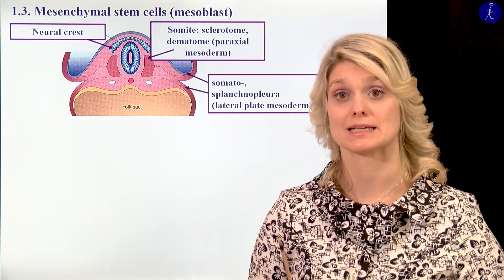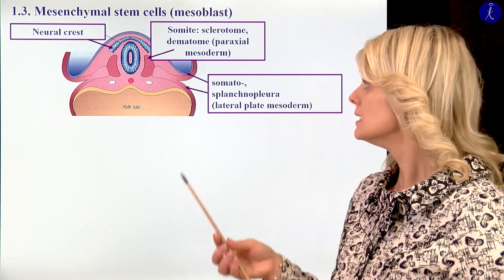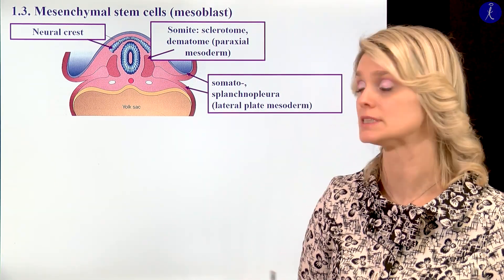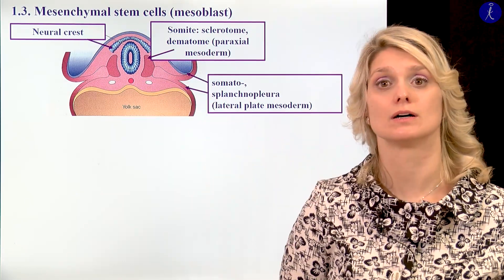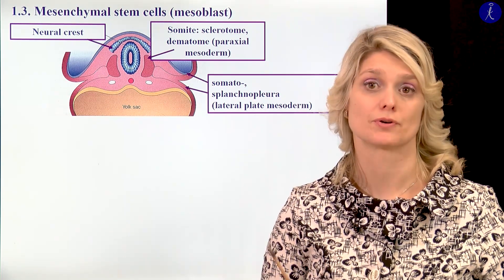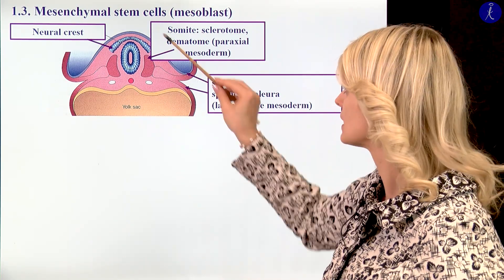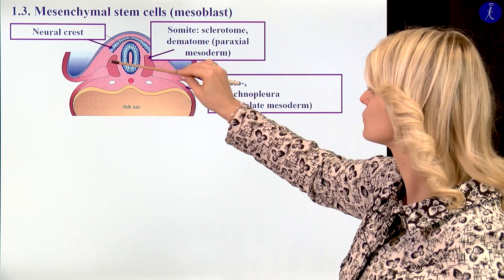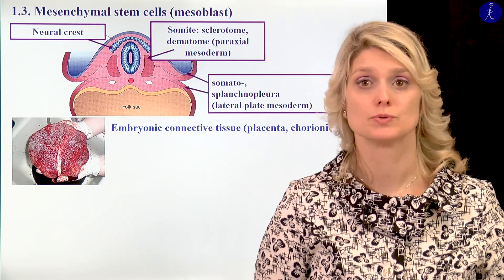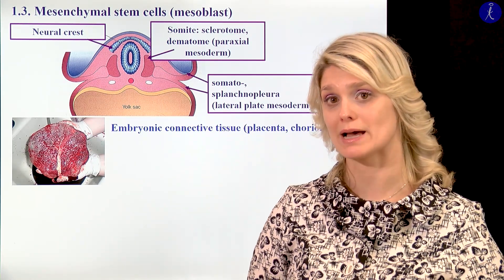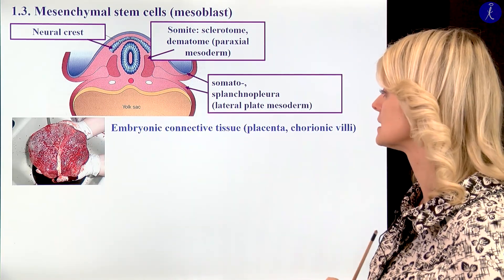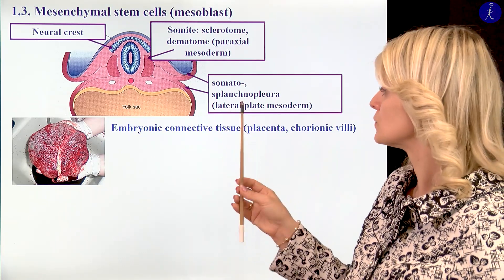I would like to tell you some words about the mesenchymal stem cells. Don't worry about this picture — you will learn about the different germ layers and the development of the main organs after your embryology lectures. Here we can see the main germ layers: the ectoderm, the mesoderm, and the endoderm. The connective tissue — the main part of it — will be from the mesoderm. One part could be from the neural crest.